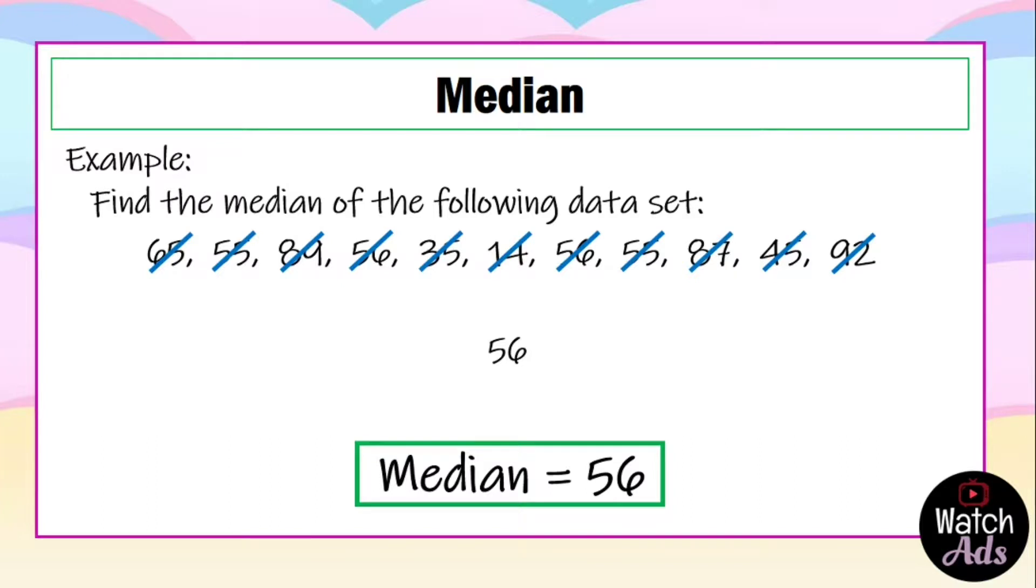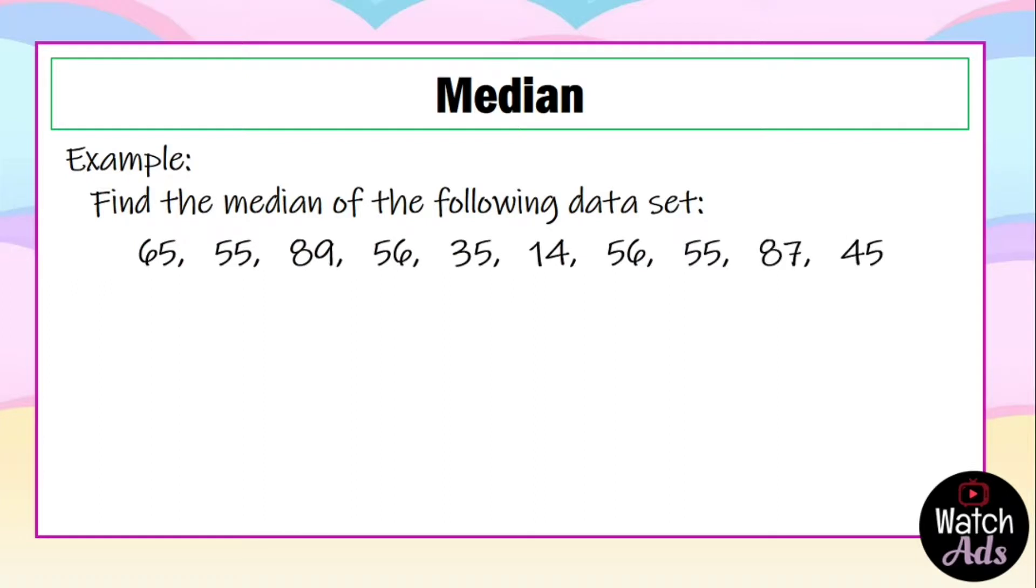Let's try another example. We have the data set. We still follow the same procedure, that is we arrange the numbers from least to greatest.